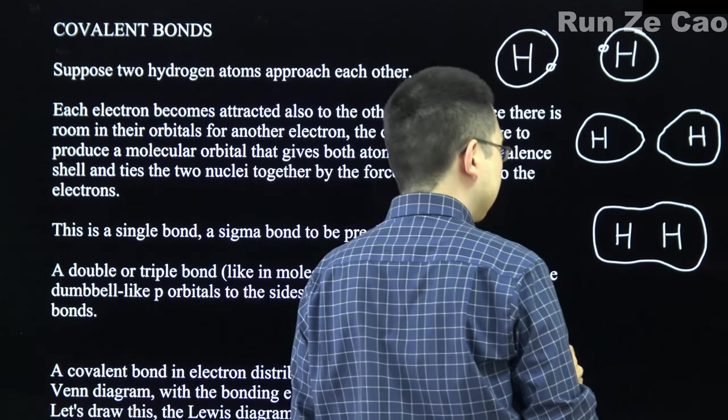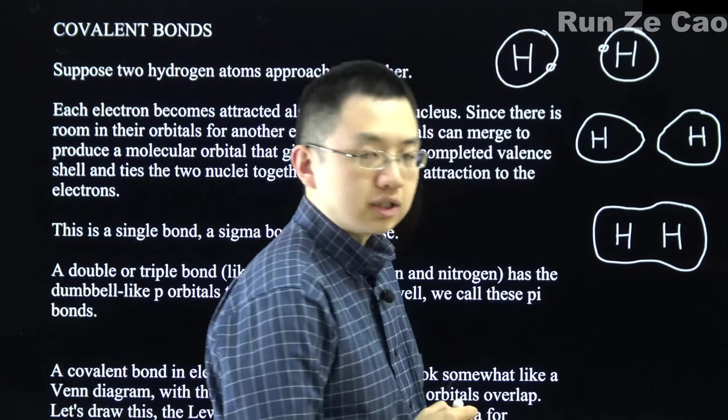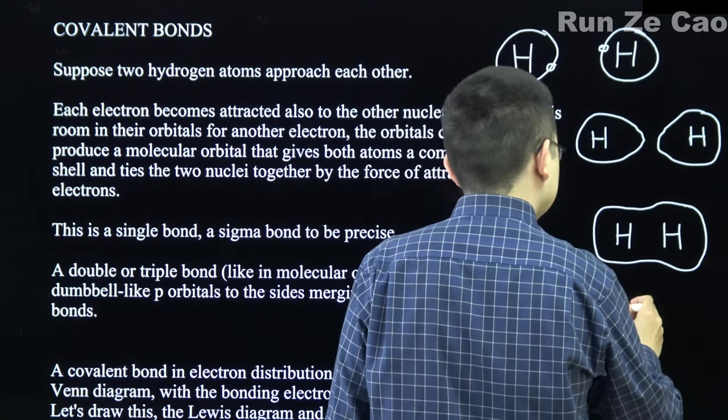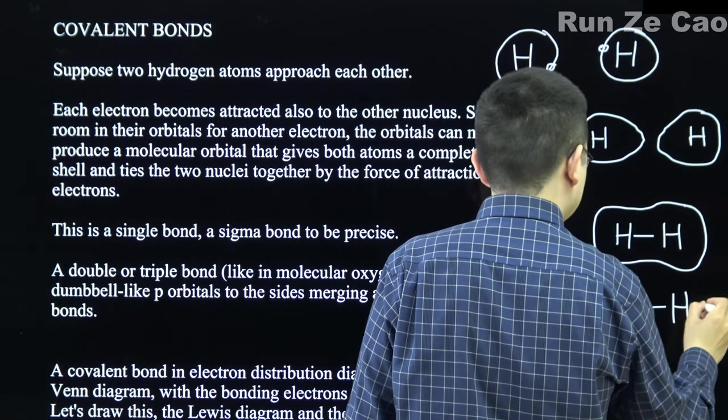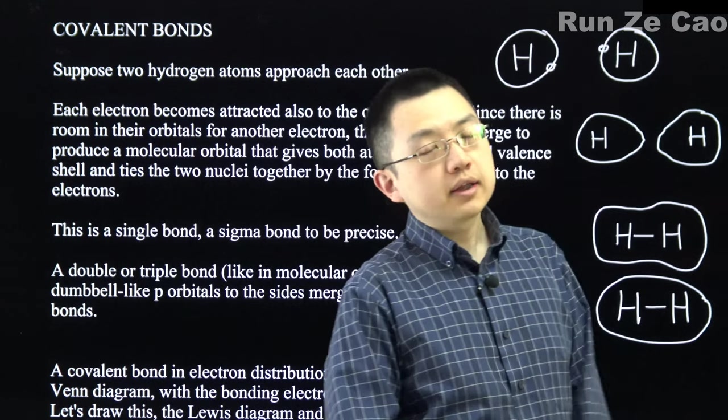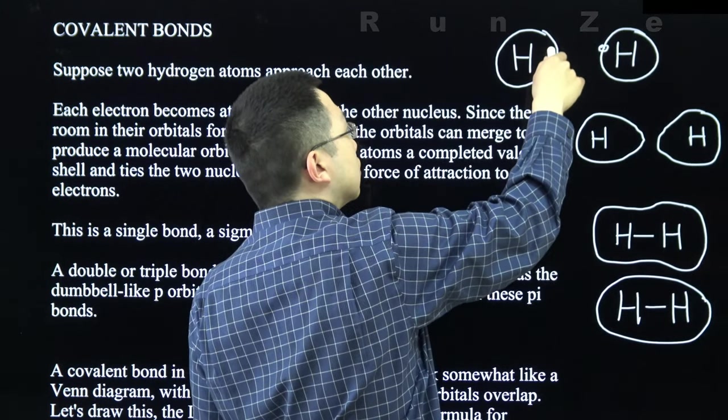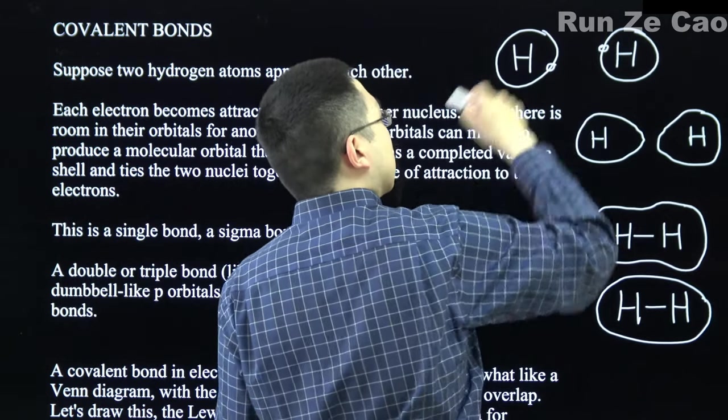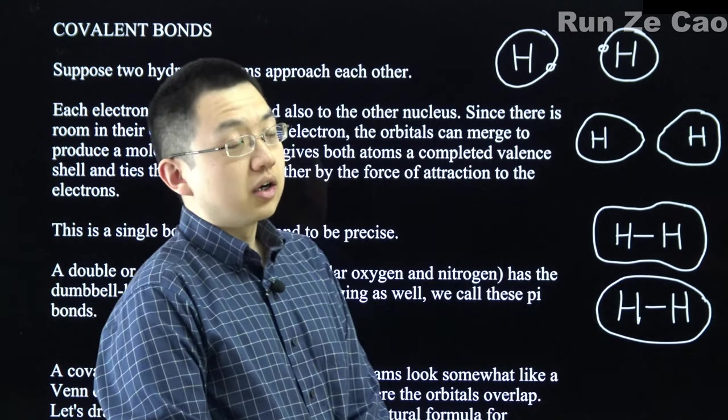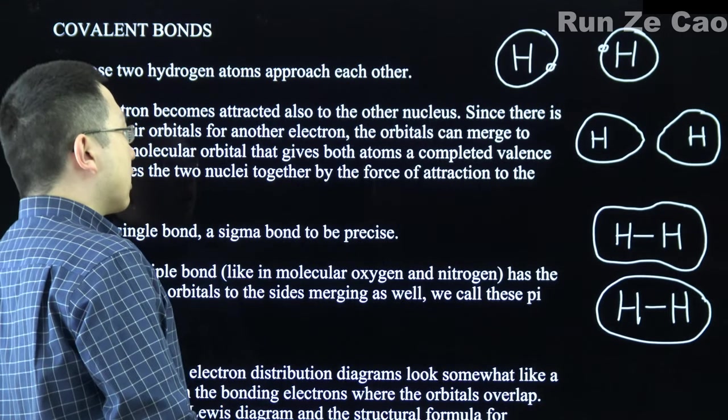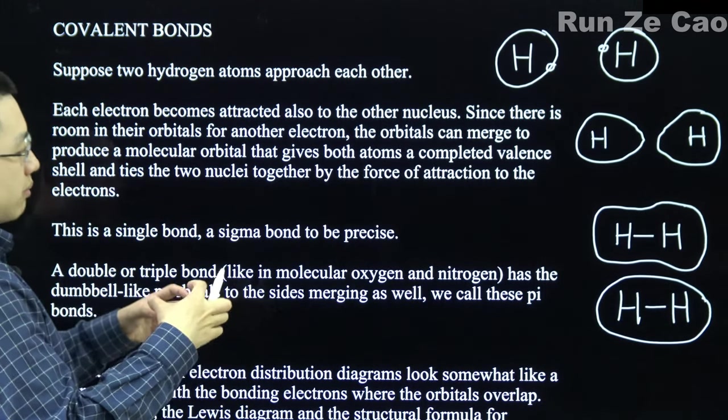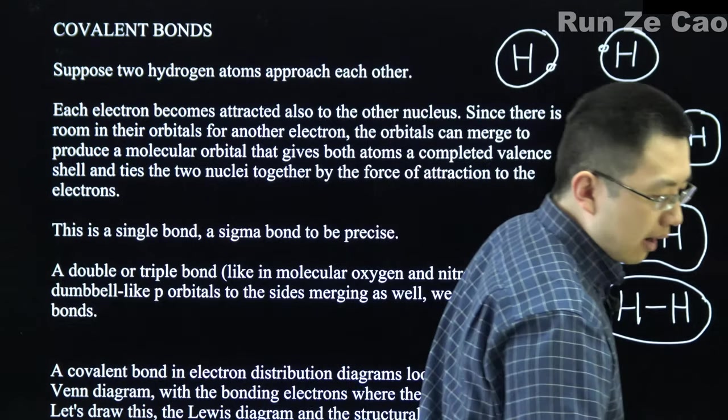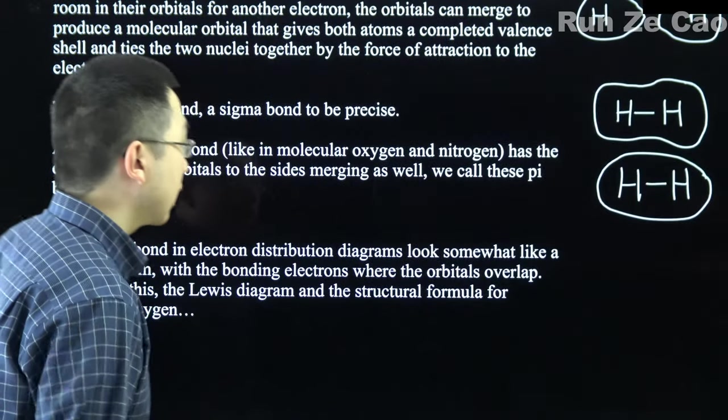It still looks kind of blobby. Mileage may vary on whether your textbook rendition will have it be dumbbell-shaped or one big oval. We now draw this line here to designate that this is bonded. What's happening is that the electron slots into the other atom's orbital, whereas the other atom's electron also slots into this atom's orbital, because they can fit one more electron. This is called a sigma bond. It is directly between two atoms. This is a single bond. If you have a double or triple bond, then you have the dumbbell-like P orbitals to the side also bonding, and we call these pi bonds.